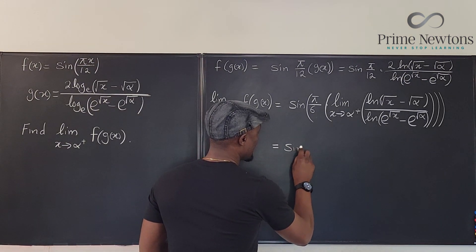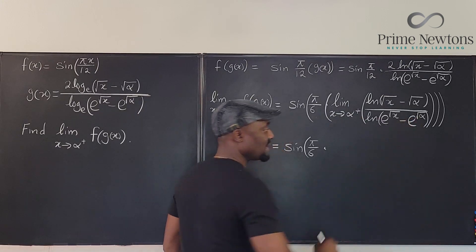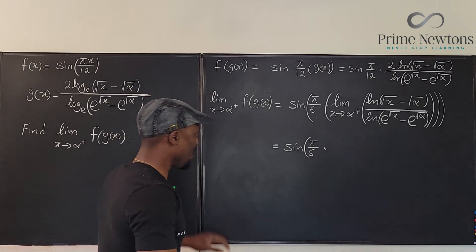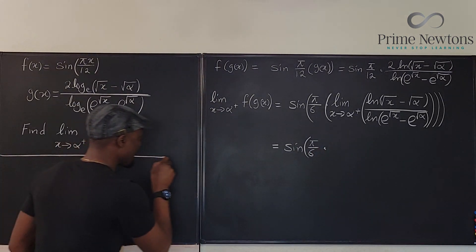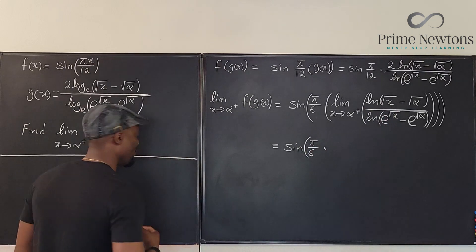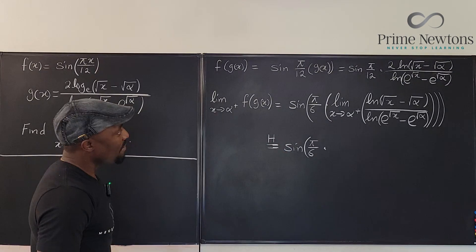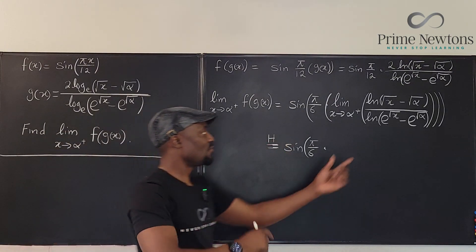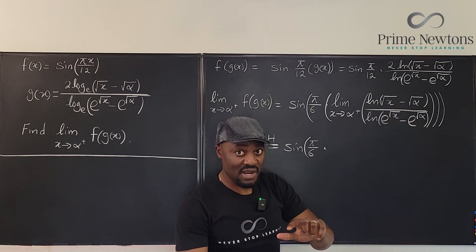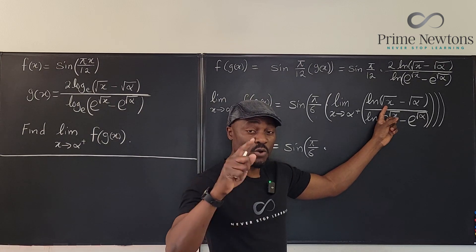This is equal to sine of (π/6) multiplied by whatever we get when we take this limit. The task now is to find the limit using L'Hôpital's rule. To apply L'Hôpital's rule, we differentiate the top and differentiate the bottom. Remember how to differentiate a natural log function: it is the derivative of the argument divided by the argument.